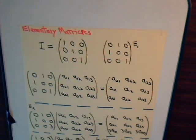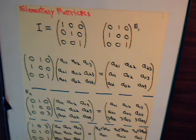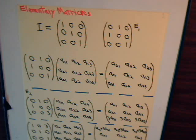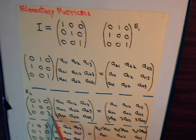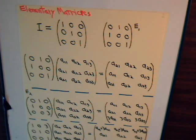Another type of elementary matrix is obtained by multiplying one or more rows of the identity matrix by some constant. For example, this is the identity matrix with the last row multiplied by 3. We could have multiplied any row by any constant. When another matrix is multiplied by this type 2 elementary matrix, it multiplies the corresponding row — here the third row — by that same constant, 3.